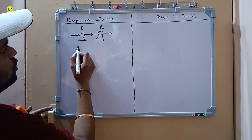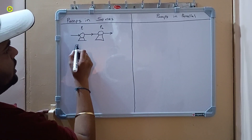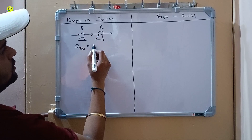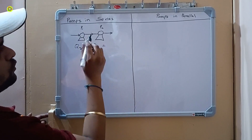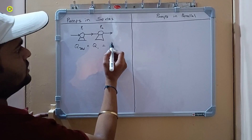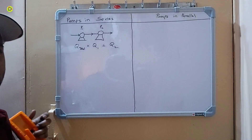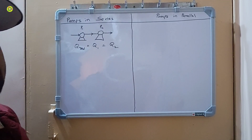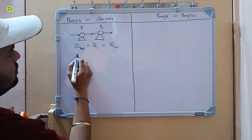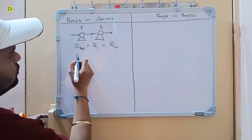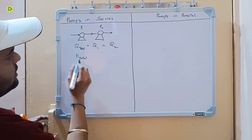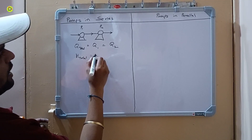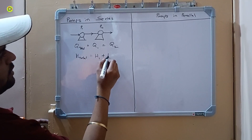In the series arrangement, the flow rate Q is constant: Q total equals Q1, which equals Q2. Because of this series arrangement, we get a higher head. H total equals H1 plus H2.